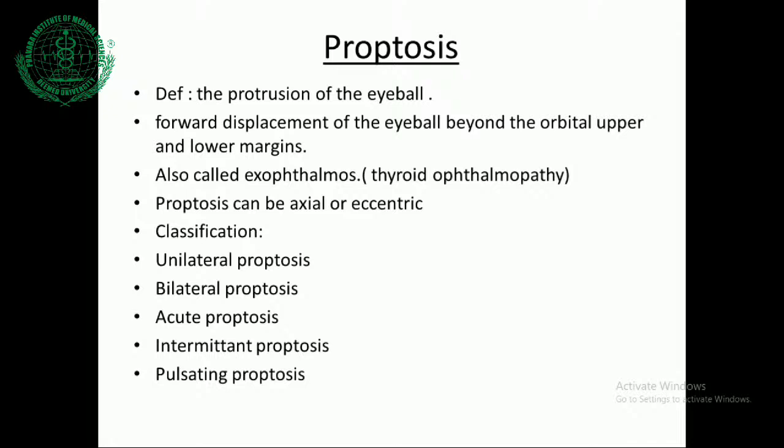Now coming to the topic of proptosis. In short, it is a protrusion of the eyeball in front of the orbital margins — forward displacement of the eyeball beyond the orbital upper and lower margins. It is also called exophthalmos, but exophthalmos is specifically attributed to thyroid ophthalmopathy or thyroid eye disease. Proptosis can be axial or eccentric. The classification includes unilateral, bilateral, acute, intermittent, and pulsating proptosis.